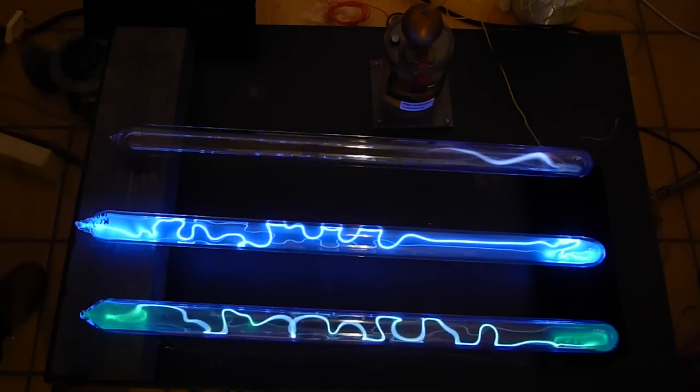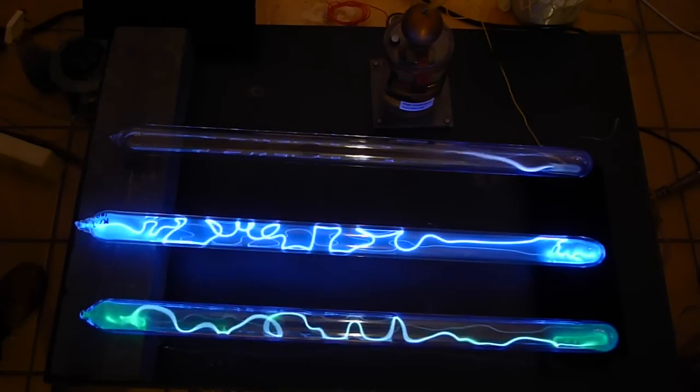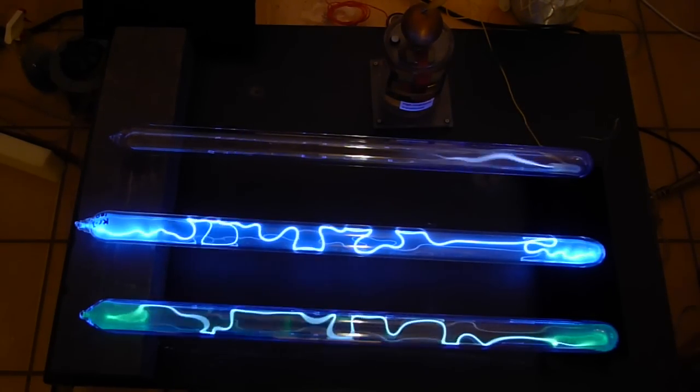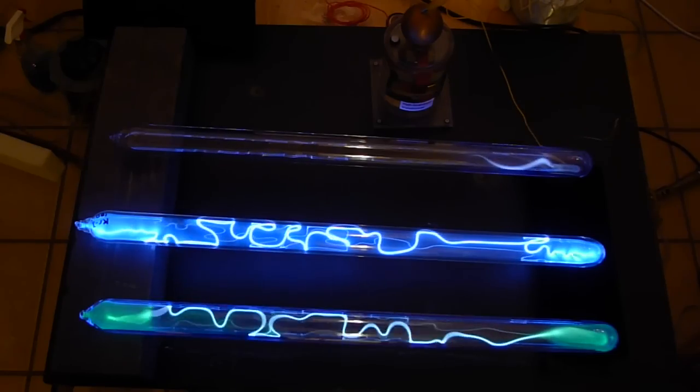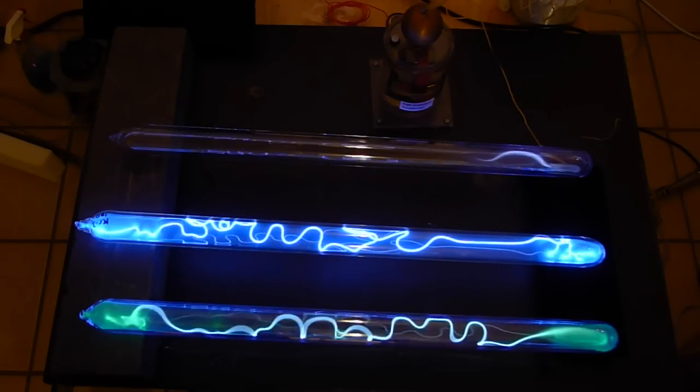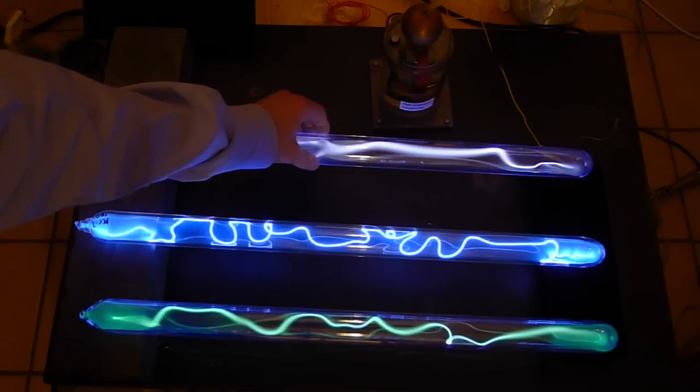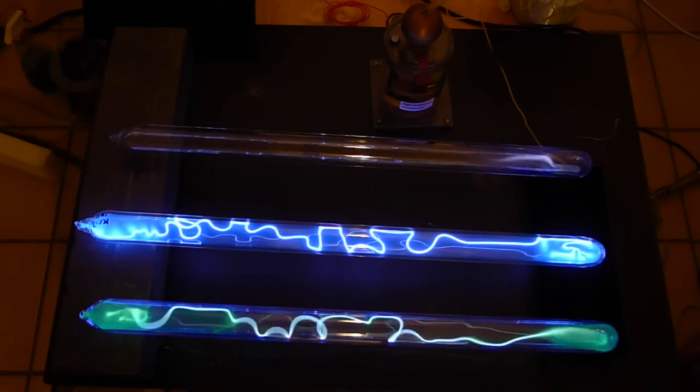I'll turn it down almost to the point where that high-pressure discharge extinguishes. I mentioned that that top tube is krypton at 200 torr, that's the highest pressure. It's hard to maintain that discharge at that pressure, although you see I can indeed draw it out.